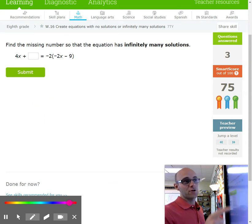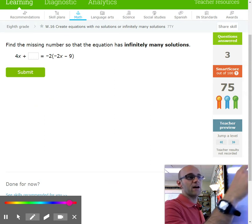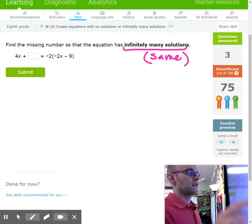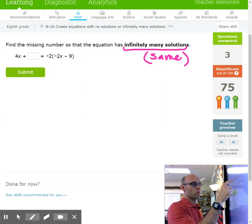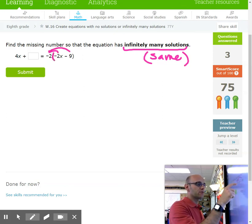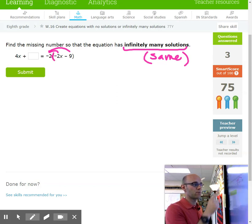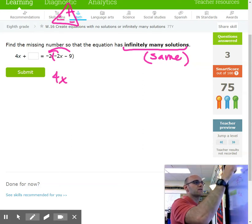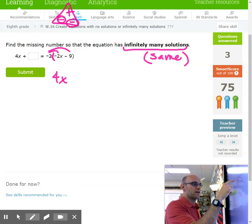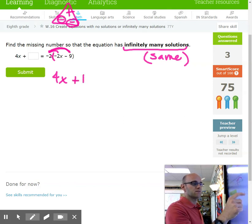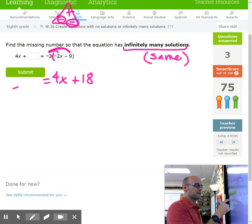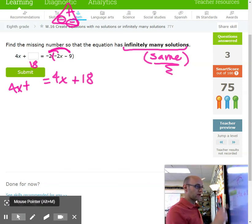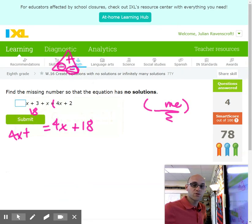At this point, maybe you're starting to know some codes. Infinitely many solutions really just means everything I plug in is going to make it true, so I need them to look the same. Now, if our goal is to make these equations look the same, first we need to probably decipher what this reduces to. Let's deal with this parenthesis. We need to multiply negative 2, and negative times negative is going to be positive. Negative 2 times negative 9 is going to be a positive 18. So this side ends up turning into 4x plus 18, so that means this side needs to look the same, so we're missing an 18 there. This is going to wrap up this topic for us.